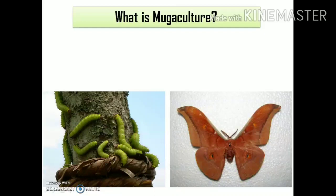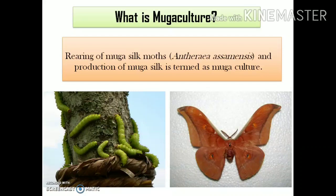We are going to learn about what is Muga culture. Muga silkworms are those silkworms which are involved in the production of Muga silk. Muga culture is defined as the process of cultivation or rearing of the Muga silk moths, that is Antheria assamensis, and the production of Muga silk. Here are two pictures depicting the larval stage and the adult stage of the Muga silkworms.